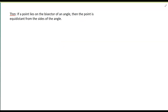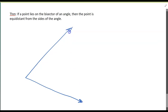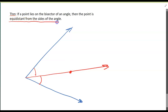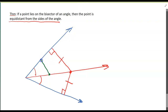Here are a couple more theorems that are converses of each other. If I've got an angle and I draw the bisector of that angle, then any point on this bisector is equidistant from the sides of the angle. That means if I draw the distance from the point to each side — and remember, from a point to a line it must make a perpendicular angle — then this distance is equal to that distance. Any point on the angle bisector is equidistant from the sides of the angle.